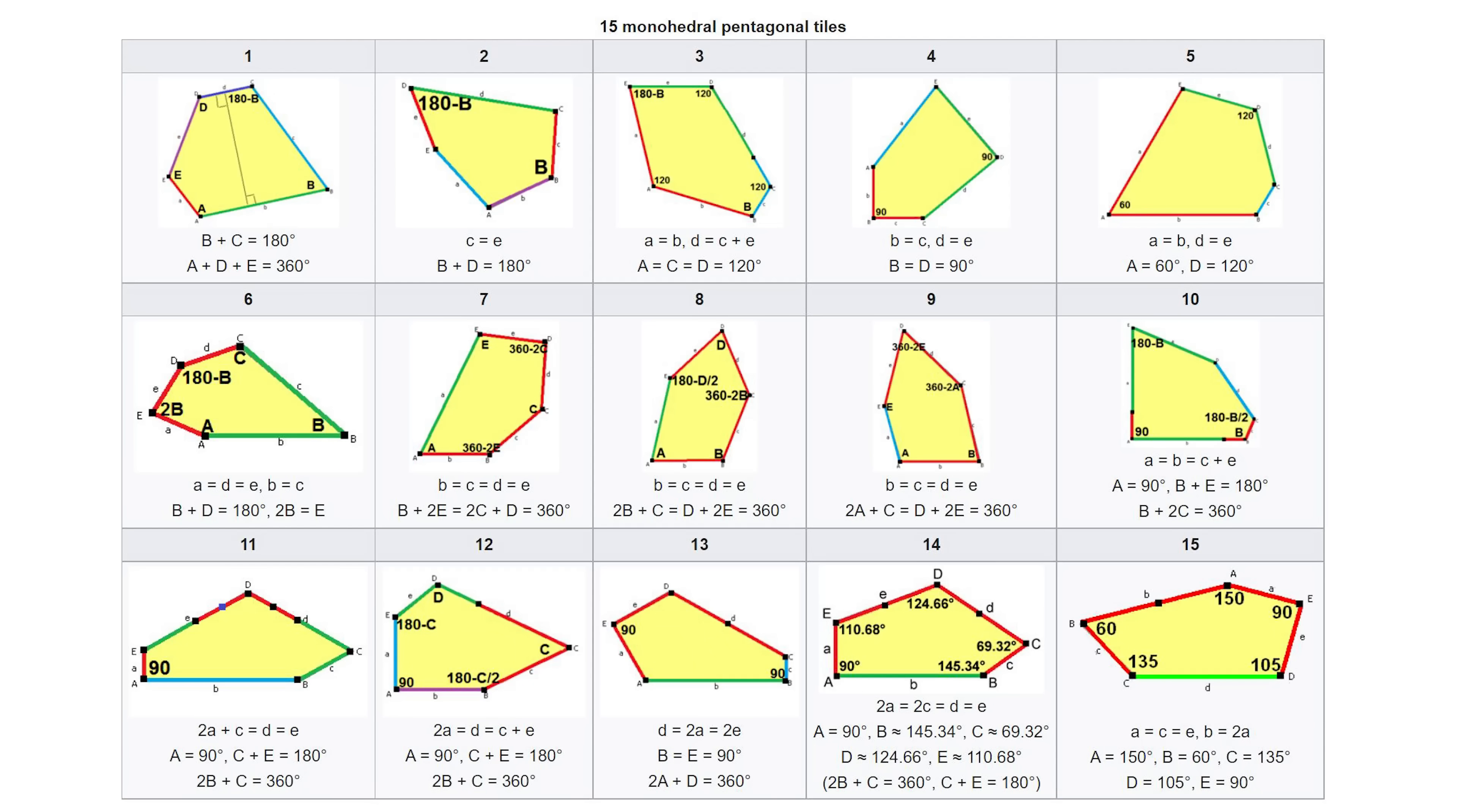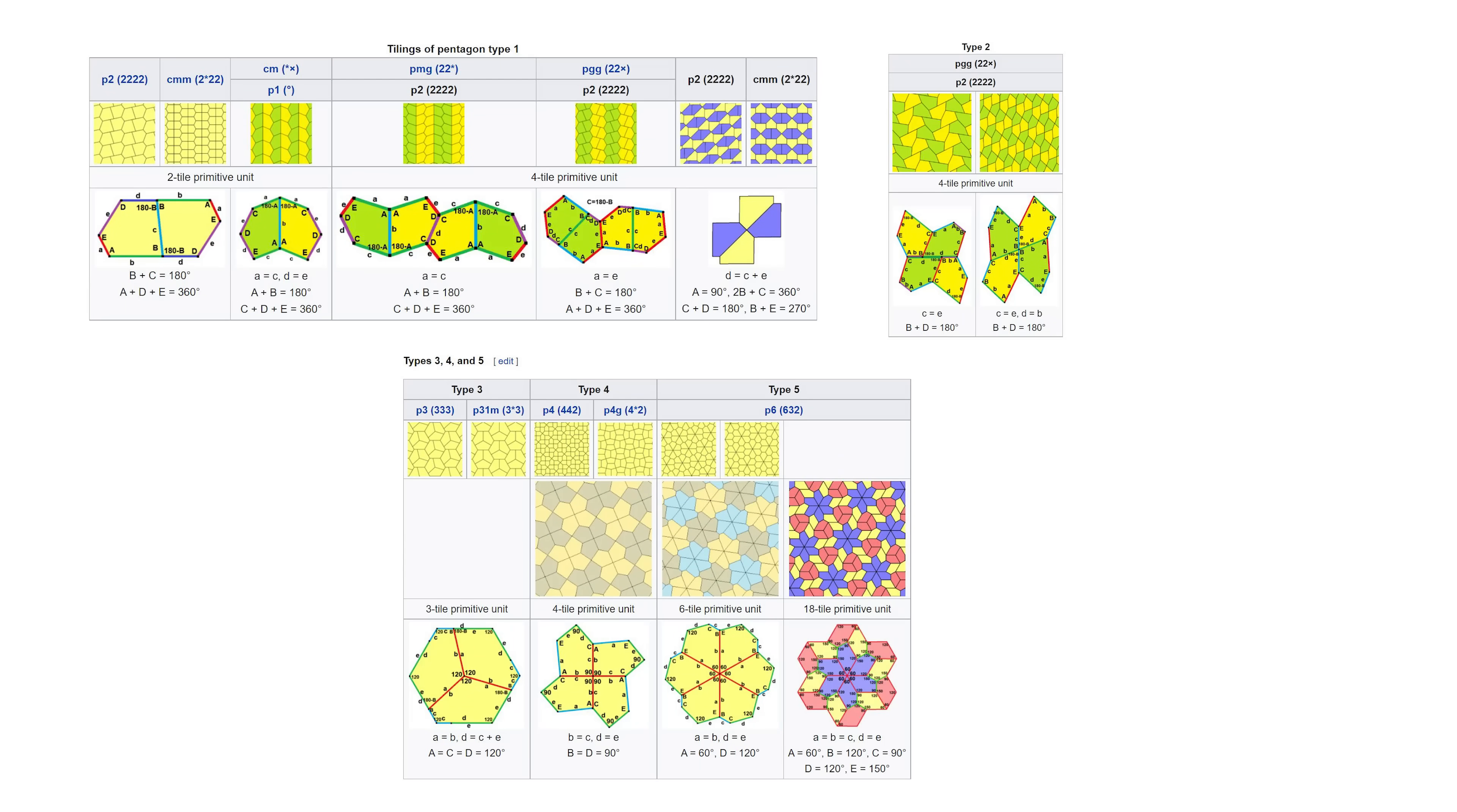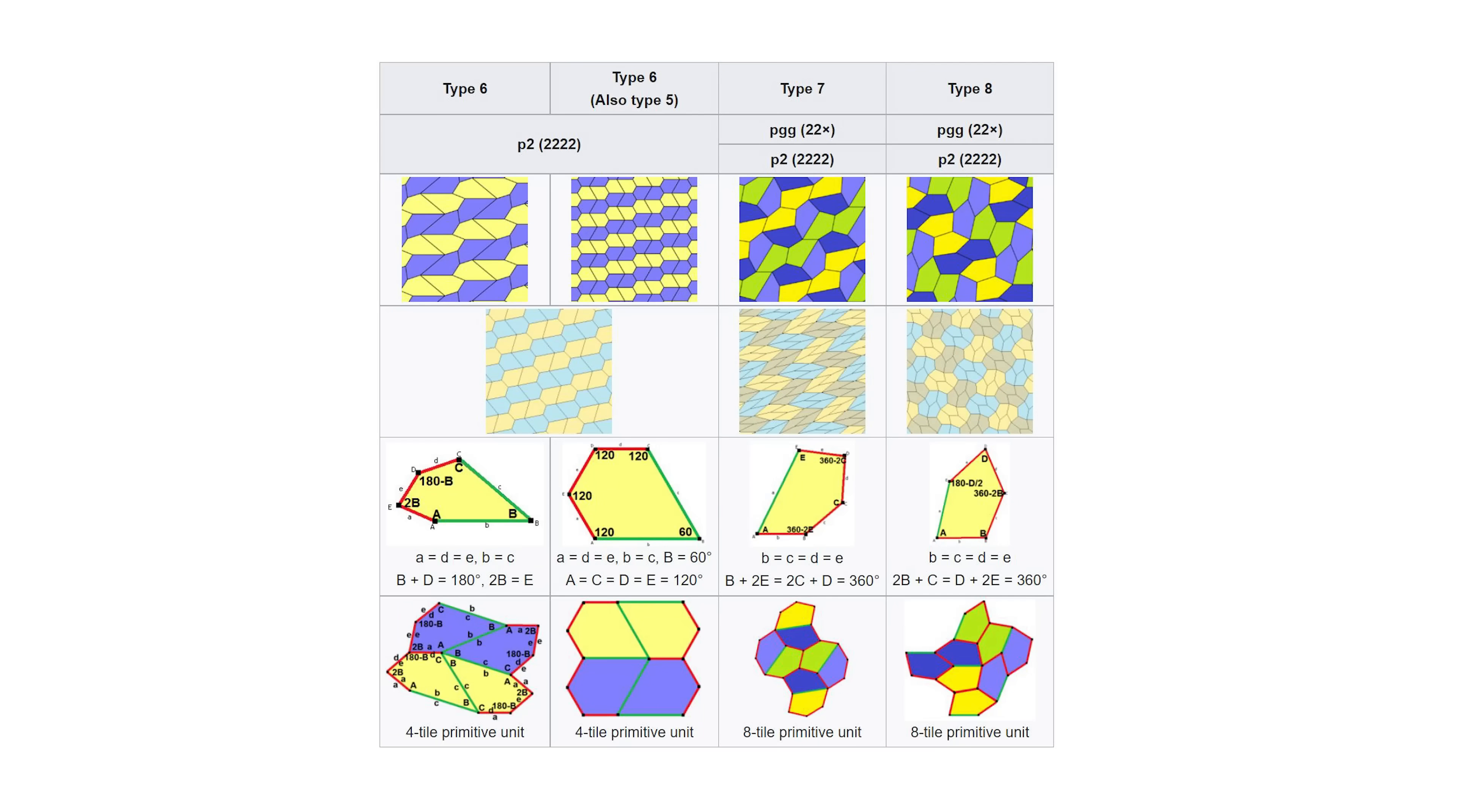The story of how they were discovered is actually pretty interesting. In 1918, a mathematician named Karl Reinhardt found five pentagons that tessellate together. And it wasn't until 1968 that a scientist named Kirschner found three new types. What's funny about this is he also published a proof that said that there were actually only eight pentagons that can tessellate together. So he said that the list was complete.